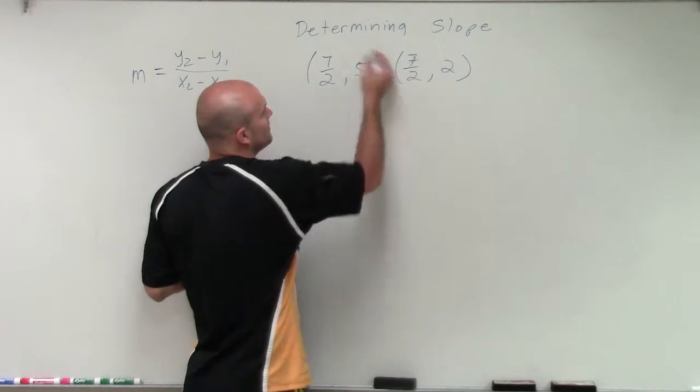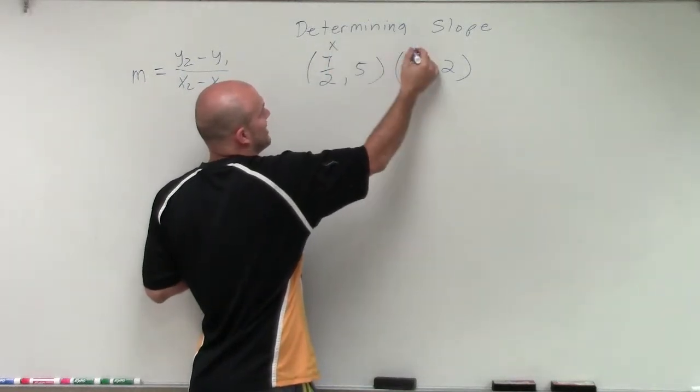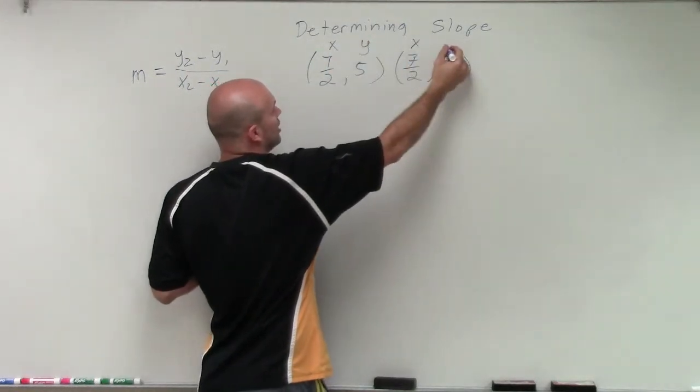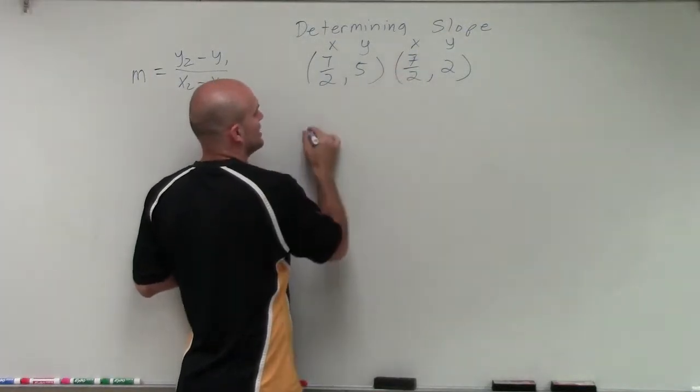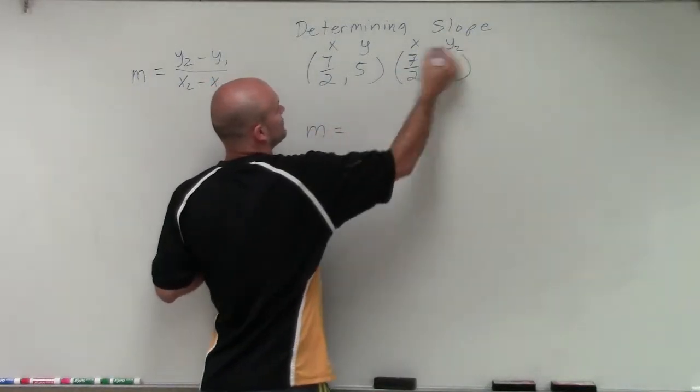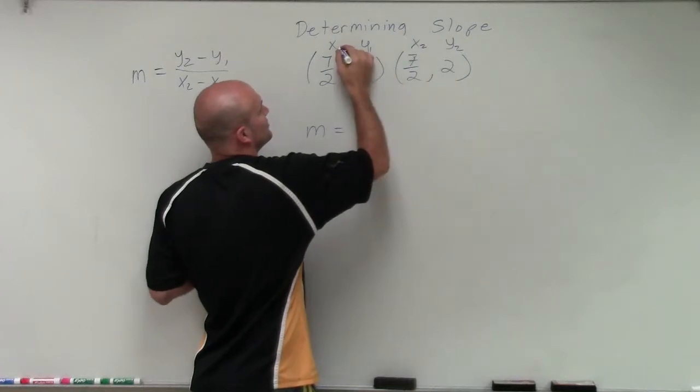So I want to determine the change in my x-coordinates over or under the change in my y-coordinates. So to find the change in my y-coordinates, I'll label this y2 and this y1, this x2 and this x1.